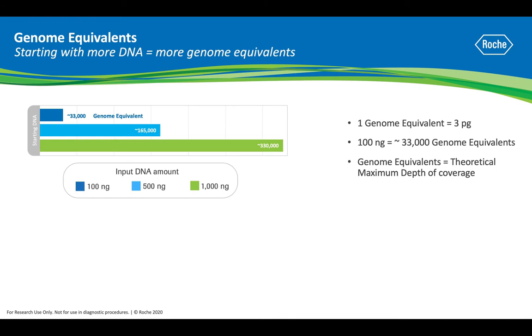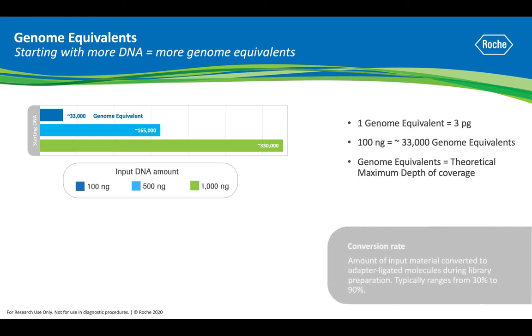However, during library prep, some of the genome equivalents are lost due to the conversion rate, which equals the amount of input material converted to adapter-ligated molecules. Typical ranges for conversion rates are 30 to 90 percent, depending on the library prep.